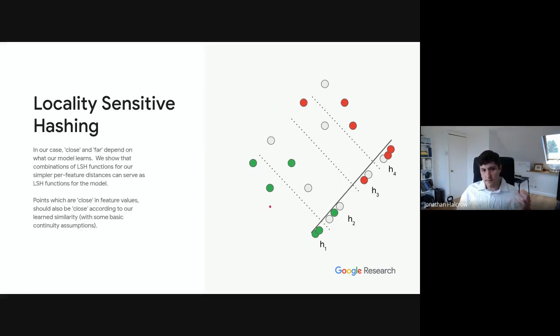However, in the case of GRAIL, close and far is really dependent on what the model learns, so we're in a little bit of a catch-22 because we're using this to actually train the model itself. So what we can show in the paper is that given that we have some LSH functions on the simple per-mode distances, we can use these as stand-ins for an LSH function for the model itself. And the reason for that boils down to basically the fact that points which are close in these feature spaces should also be close according to our learned similarity, assuming some basic continuity of the model we're trying to learn itself.